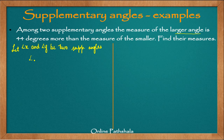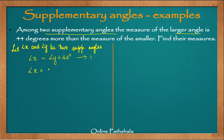Let's say that angle X is the larger of the two angles. Therefore, angle X is the larger and angle Y is the smaller. We know that the measure of angle X equals angle Y plus 44 degrees. This is our first equation — it comes directly from the problem. We also know that these two are supplementary angles, and when two angles are supplementary, their sum must equal 180 degrees. This is our second equation. We can now proceed to find the solution and determine both X and Y.